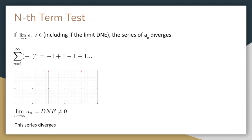There are many tests for convergence and divergence. The first is the nth term test, which states that if the limit as n approaches infinity of the nth term doesn't equal 0, the series diverges. We can use this to prove that the second series we just saw diverges. The nth term oscillates between negative 1 and 1, so the limit as n approaches infinity doesn't exist, and hence the series diverges.